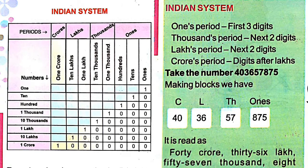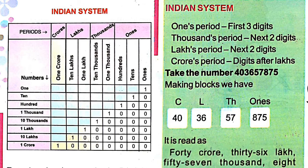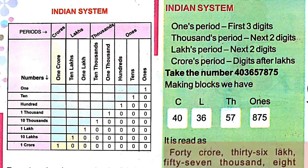So we read this number as: 40 crores, 36 lakhs — thirty-six lakh — 57 thousands — fifty-seven thousand — and 875 in the ones period — eight hundred seventy-five. The full number is read as forty crores, thirty-six lakh, fifty-seven thousand, eight hundred and seventy-five.